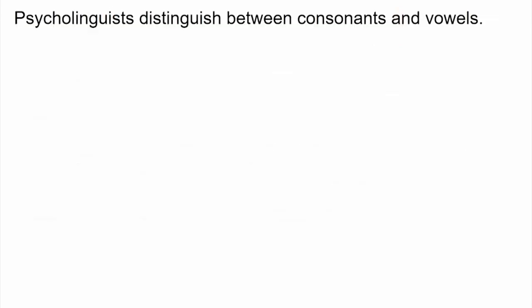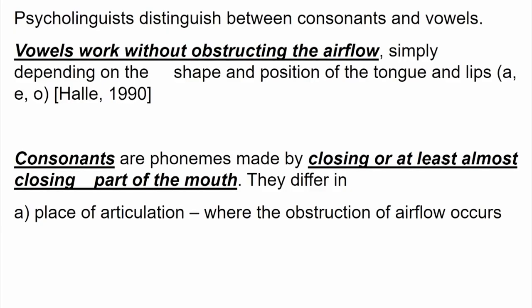Psycholinguists distinguish between consonants and vowels. Vowels are produced without obstructing the airflow — simply depending on the shape and position of the tongue and lips, a vowel is produced. When you say a, e, i, o, u, it is the change in mouth and lip shape producing the sound, with no obstruction of airflow. Consonants, on the other hand, are phonemes made by closing at least one part of the mouth — they require obstruction of airflow.